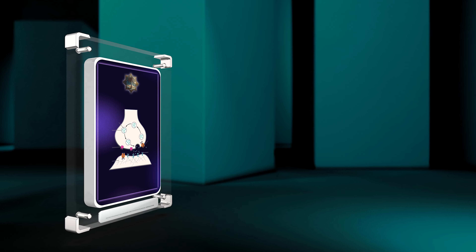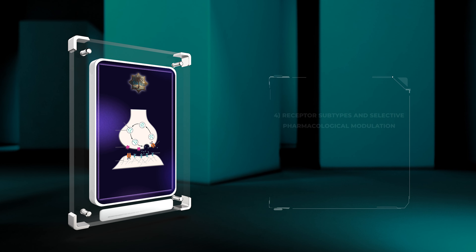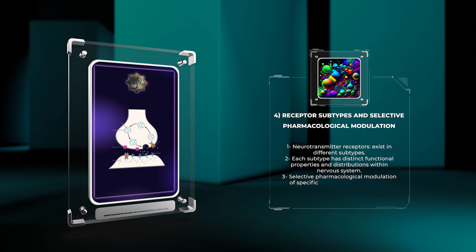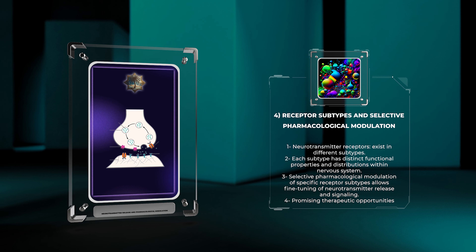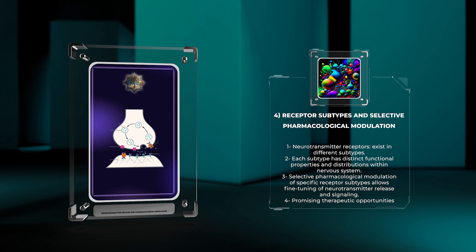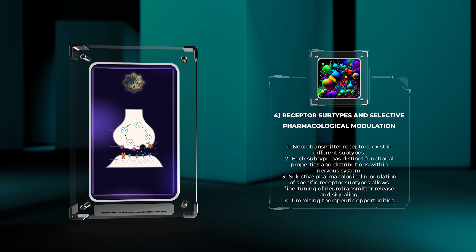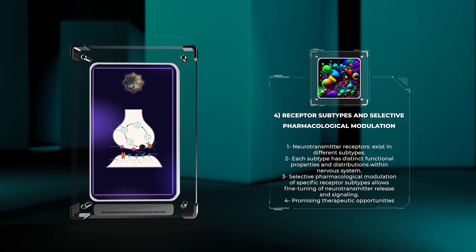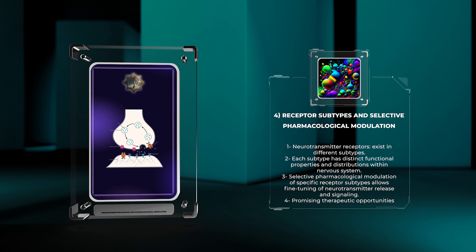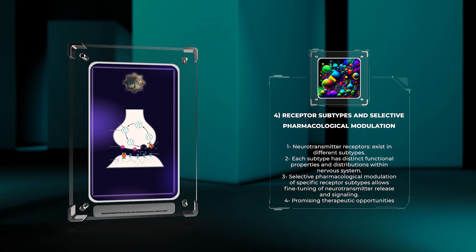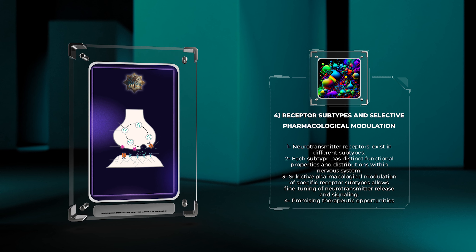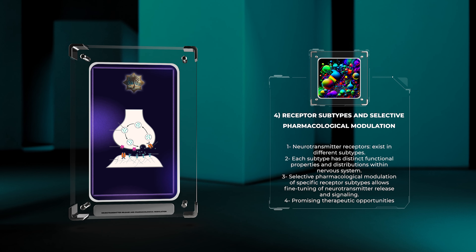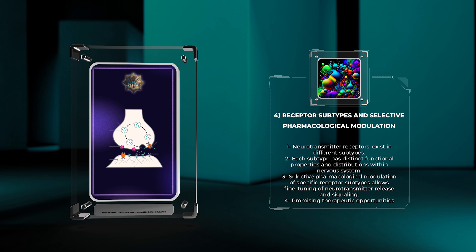Neurotransmitter receptors exist in different subtypes, each with distinct functional properties and distributions within the nervous system. Selective pharmacological modulation of specific receptor subtypes allows for fine-tuning of neurotransmitter release and signaling, offering promising therapeutic opportunities by targeting specific receptor subtypes involved in various neurological disorders.